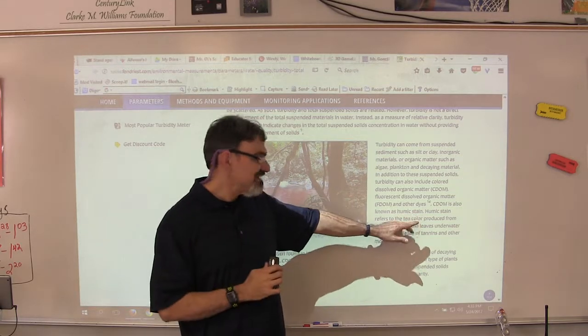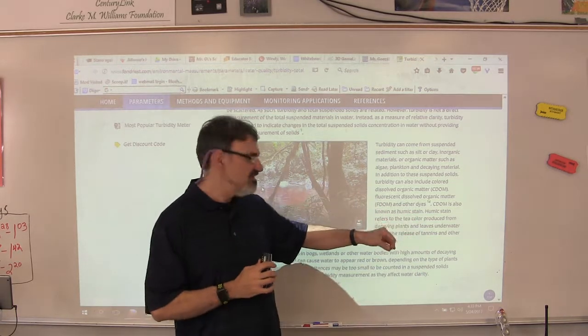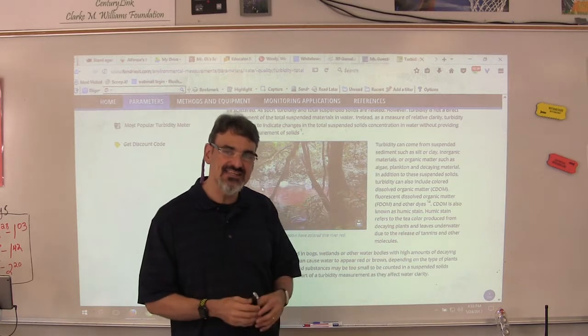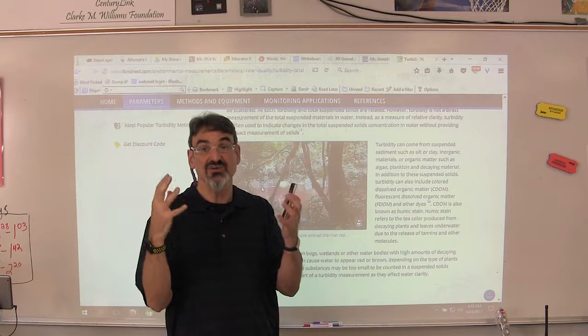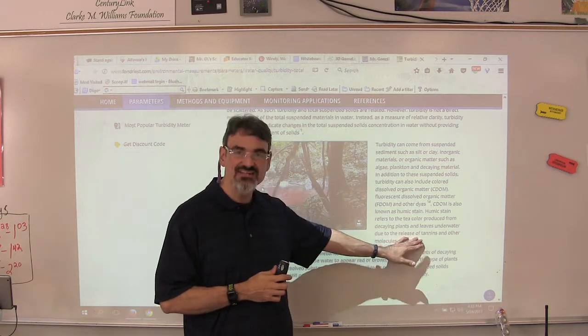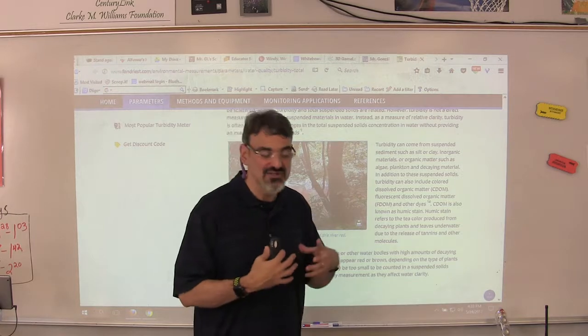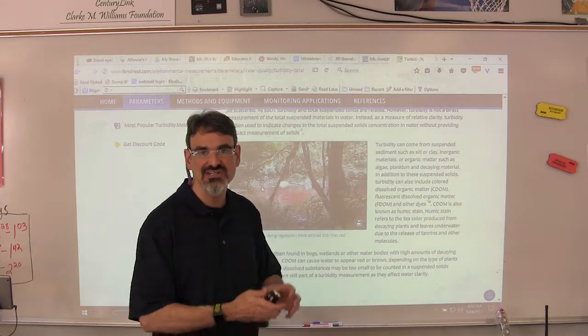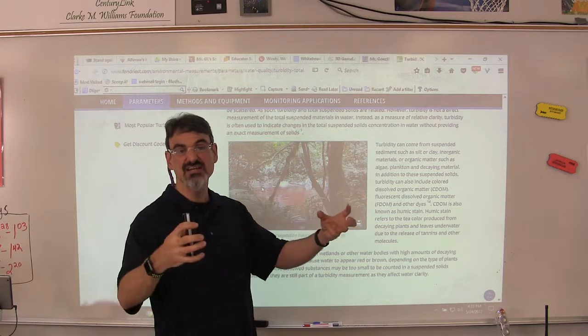Now a humic stain, which is weird why they call this humic, is produced from decaying plants and leaves and it gives water its brownish color. Like our creek is kind of yellowish brown and that comes from the release of tannins from the woody debris and all the leaves and stems that are falling into the creek and the tannins are leaching out of it from the water.